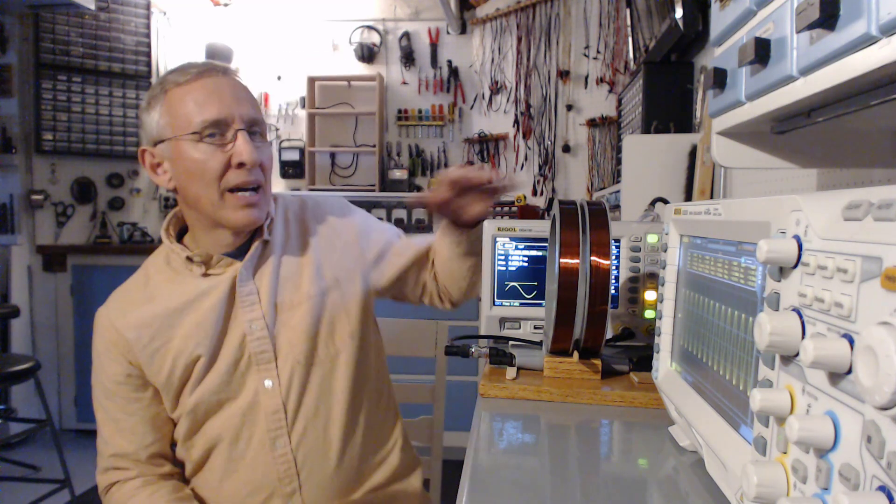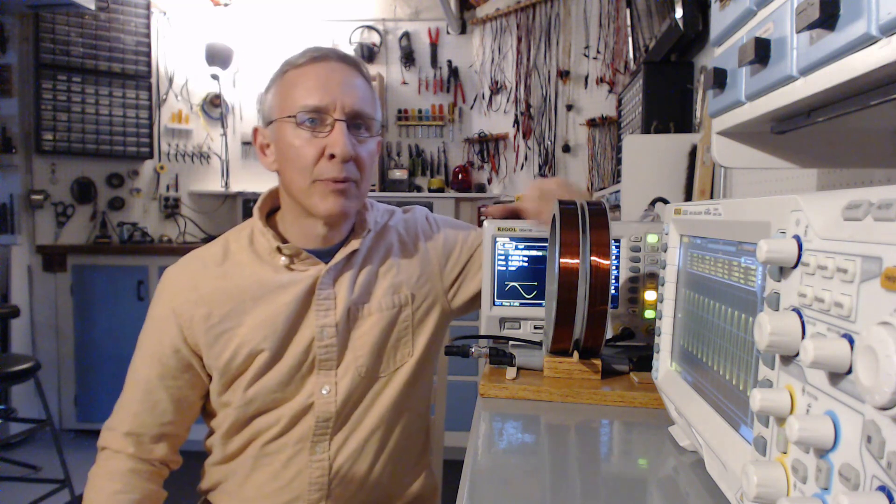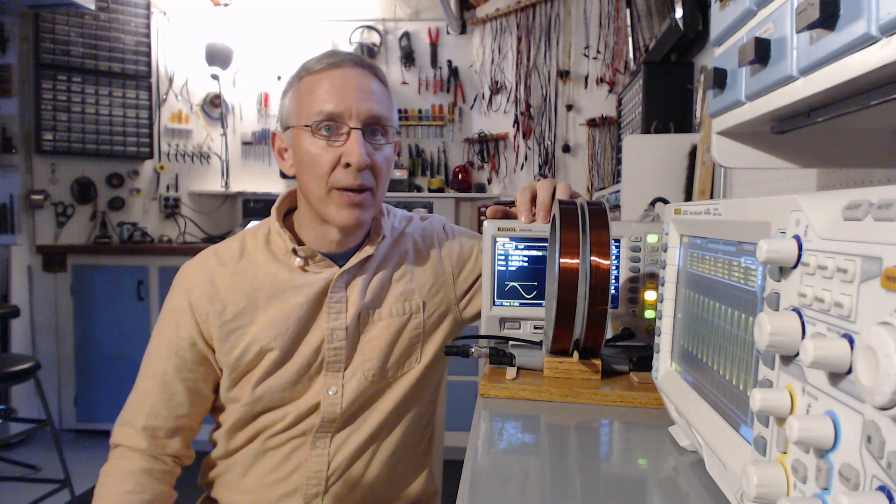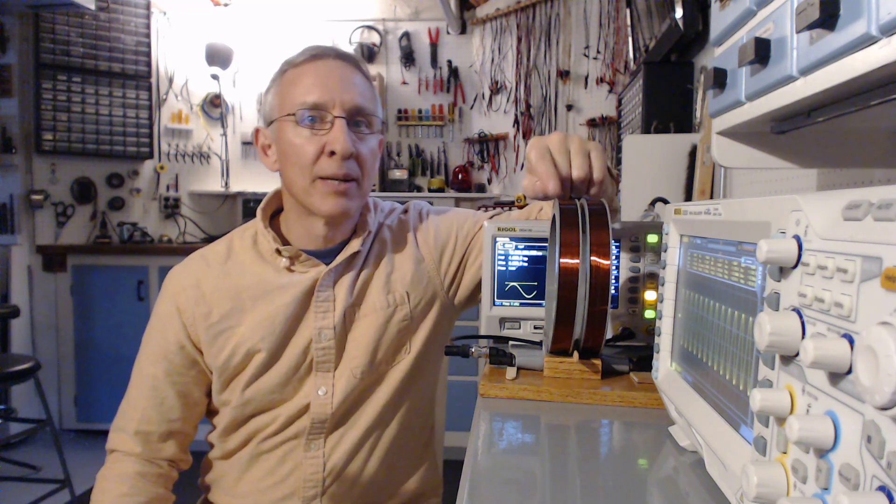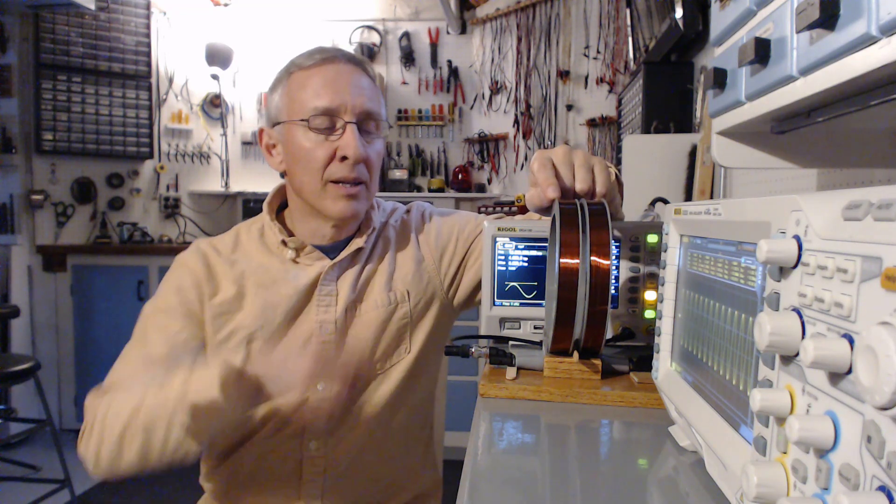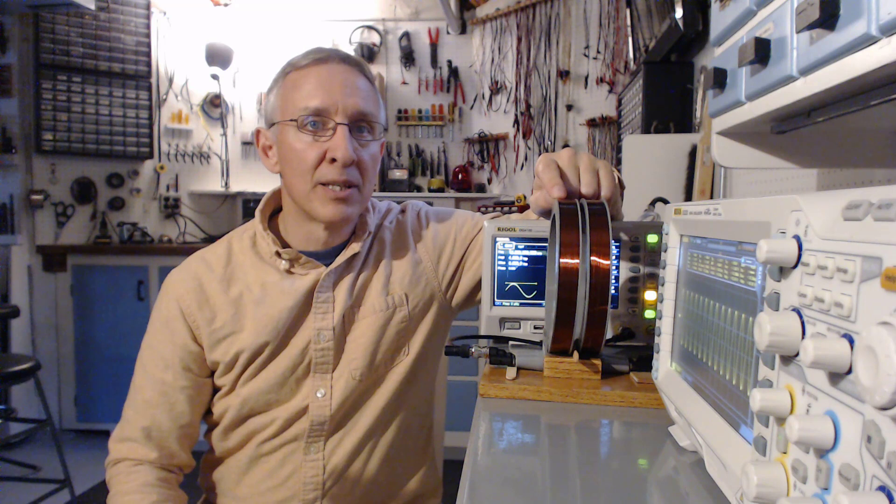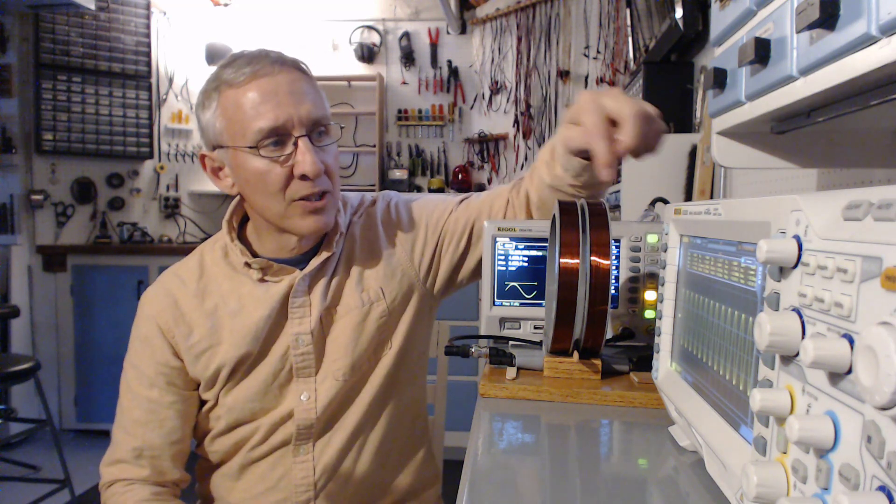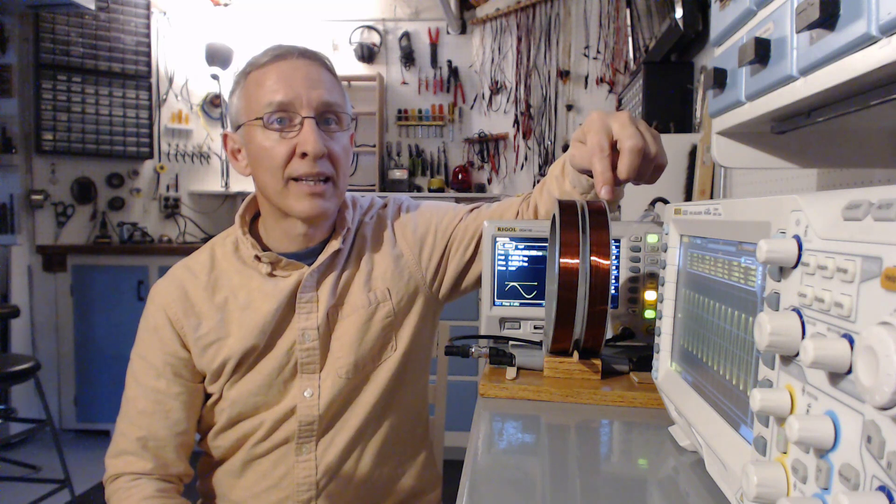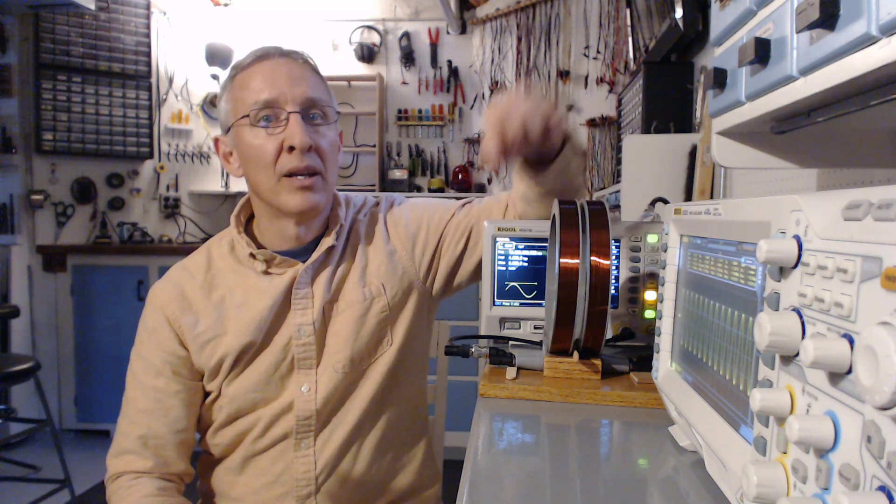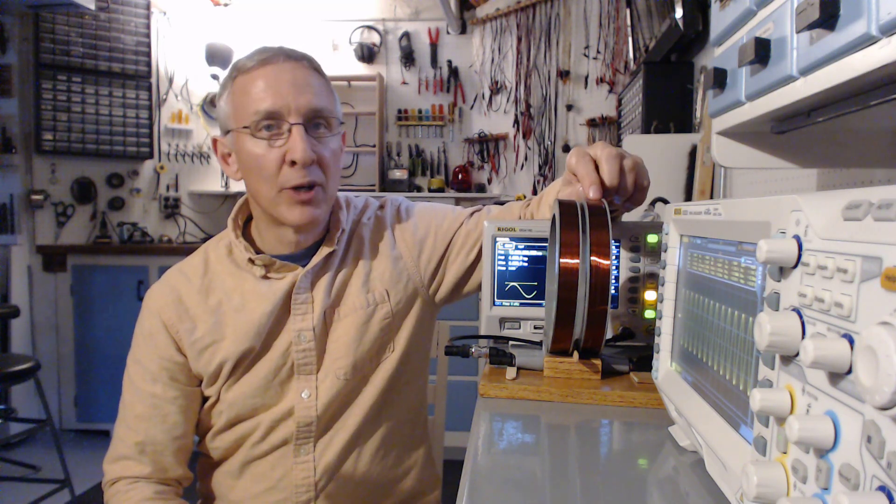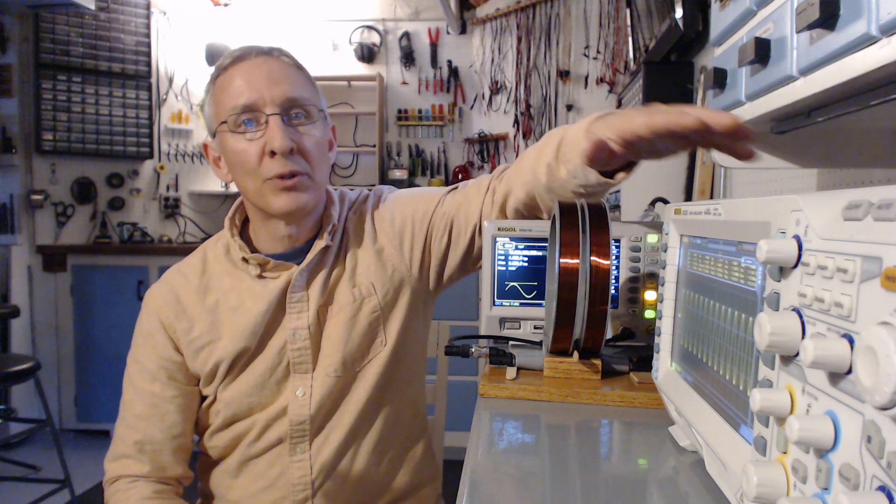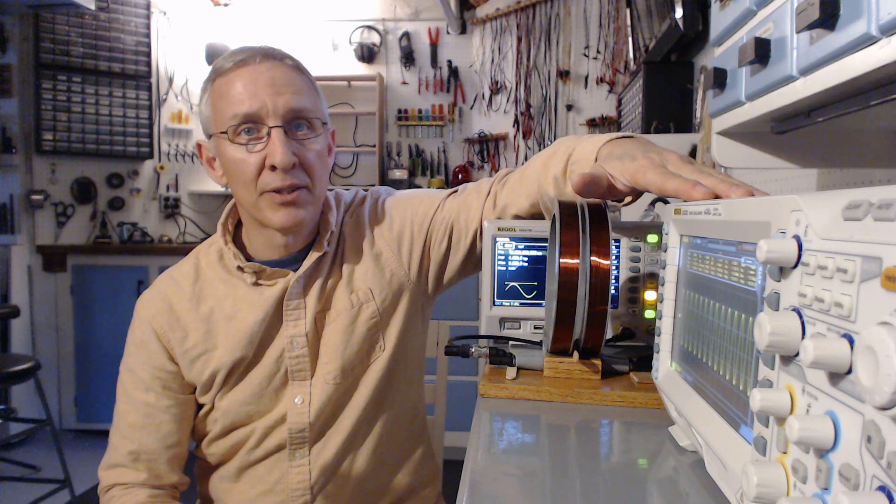Today we have a similar setup. We've got a signal generator generating a sine wave, only now instead of 60 Hz, it's a 10 kHz sine wave. That's driving a primary coil. The current flowing at 10 kHz in the primary coil is creating a magnetic field. That magnetic field passes through to the secondary coil, and so we have a time-varying magnetic flux passing through the secondary coil that's inducing a voltage that we're picking up on the oscilloscope.